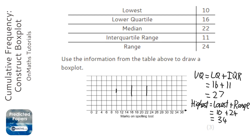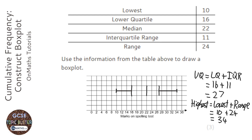The upper quartile is 27, so we need to mark that between the lines. The highest is 34, so we do a notch there as well. Then we do the horizontal lines — a line here, a line here — and join the rectangle up like so.